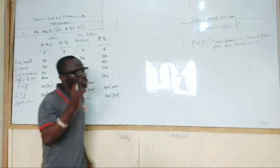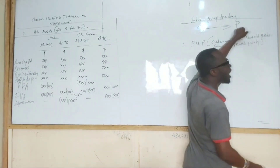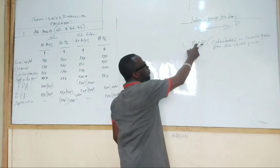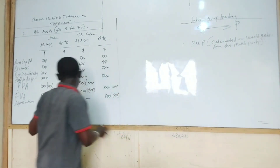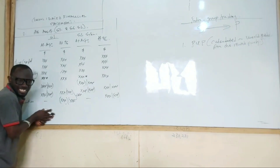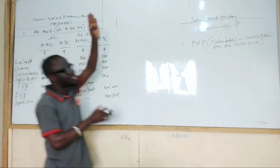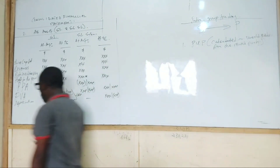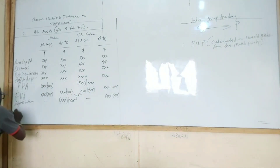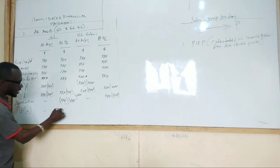So if the subsidiary sells to the parent, then the provision for unrealized profit we calculate must come and adjust the net asset. If it is the subsidiary selling to the parent, we bring PUP — provision for unrealized profit — and that one will always come to the net asset here.